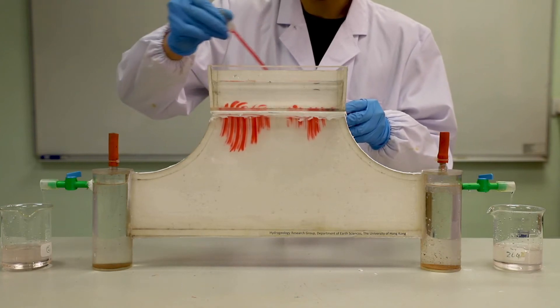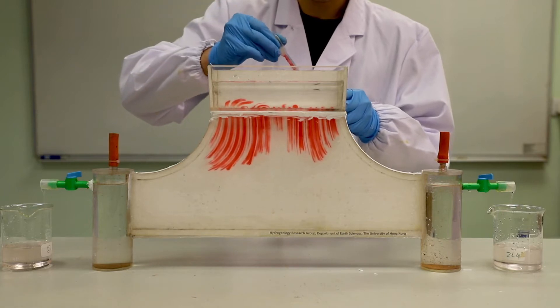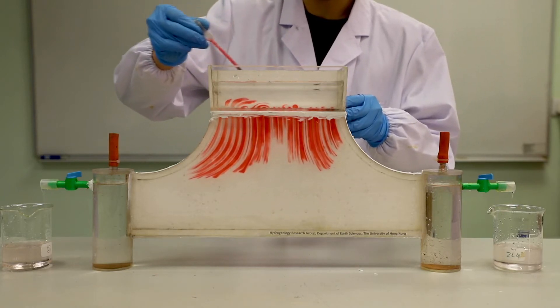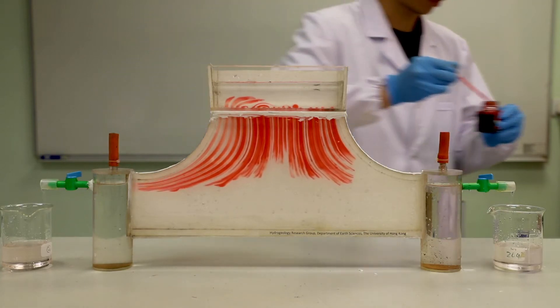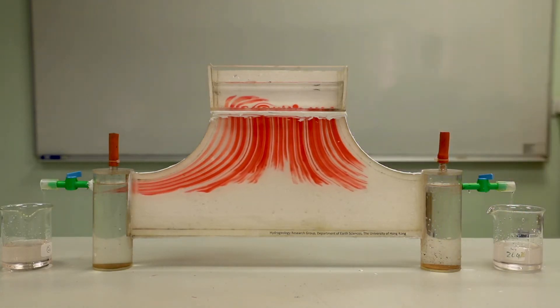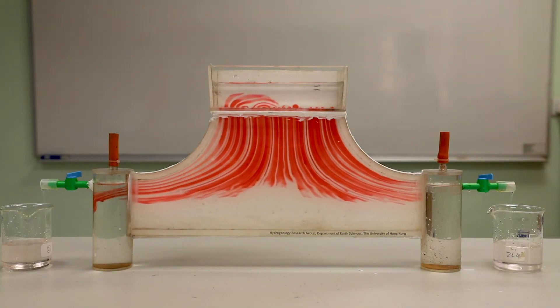This is a Healy-Shaw model that represents groundwater recharge on an island that flows to a surrounding lake. A Healy-Shaw model is two plates with a small spacing between them that is filled with viscous liquid. Flow lines in a Healy-Shaw model follow the same principles as flow lines in a homogeneous porous medium such as sand.